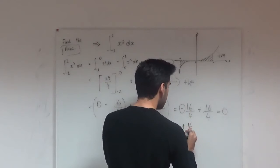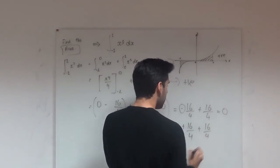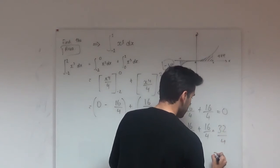we make it plus 16 over 4 and then we get plus another 16 over 4. This becomes 32 all over 4 and that simplifies down to 8.